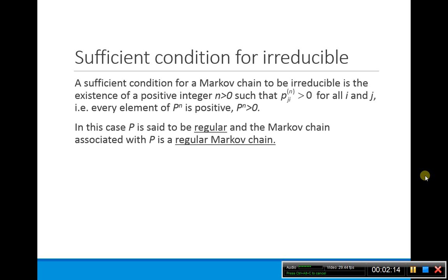An irreducible Markov chain is one in which you can start from any state and reach any other state in a finite number of steps. A sufficient condition for being irreducible is if there exists some positive number N such that the probability of going from I to J in N steps is greater than zero — meaning P(I,J)^N is positive. In this case, P is said to be regular, and the Markov chain associated with it is called a regular Markov chain.